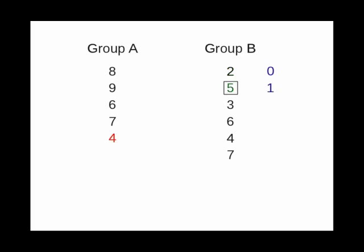Now look at the 5. It beats only one score from group A, the 4, so that means one point for group B. The 3 doesn't beat anyone in group A, so it earns 0 points for group B.